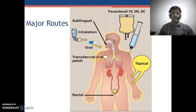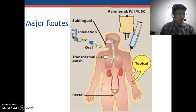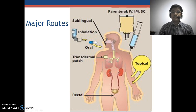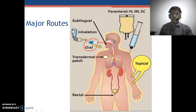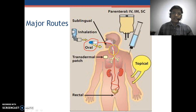This is a diagrammatic representation of the various routes available. As we can see, the first major route is the Oral Route. In the form of tablet or capsule, drugs are administered through the oral cavity. It goes through the esophagus, stomach, small intestine, and large intestine. This is the path usually followed for the oral route.